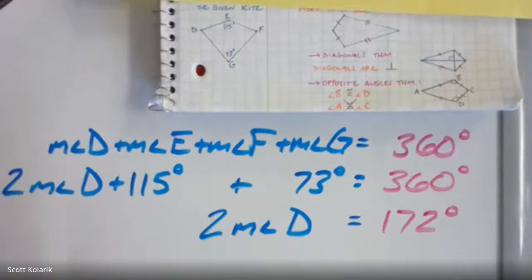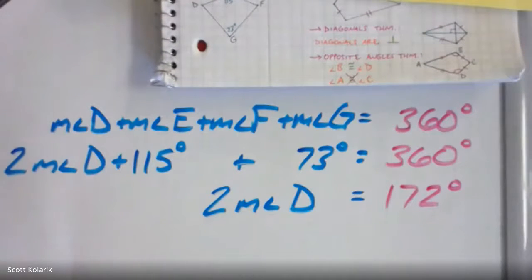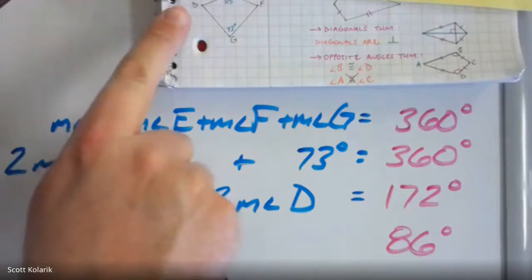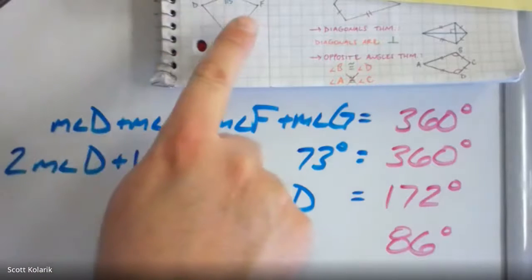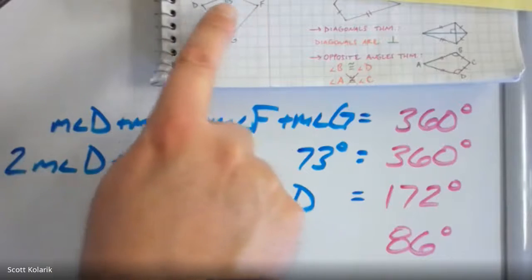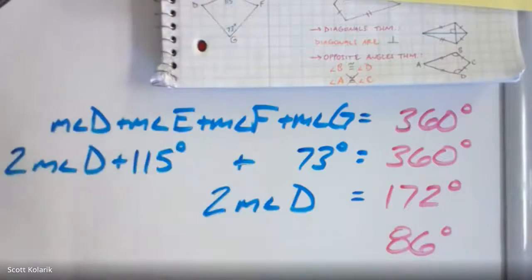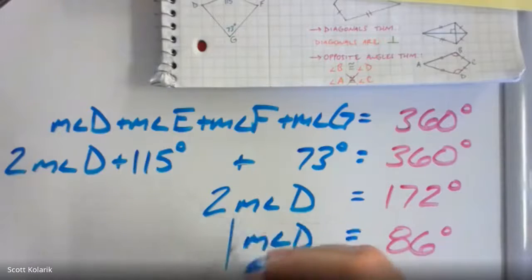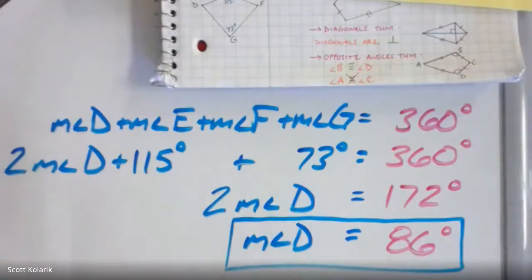Dividing 172 by 2 gives 86 degrees. So angle D equals 86 degrees and angle F also equals 86 degrees. Checking: 86 + 86 + 115 + 73 = 360 degrees. The answer to what was asked — the measure of angle D — is 86 degrees.